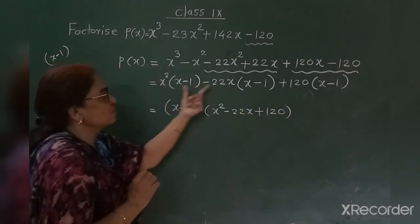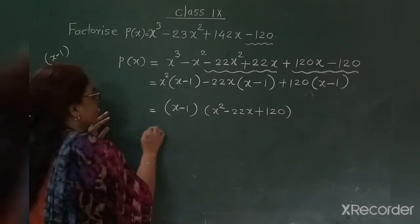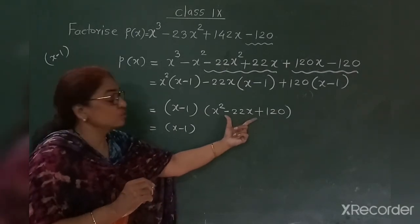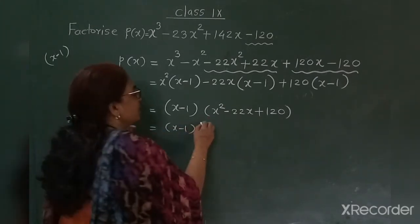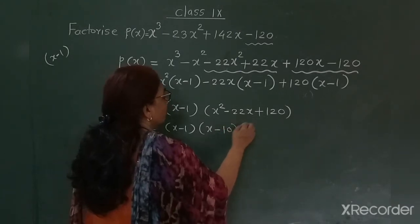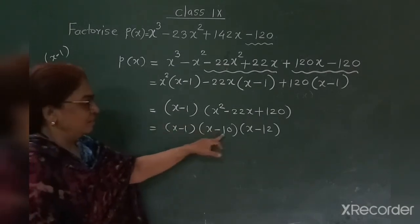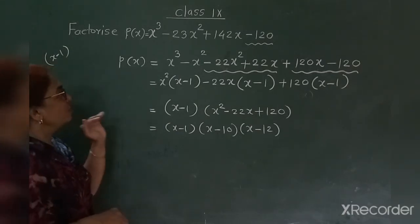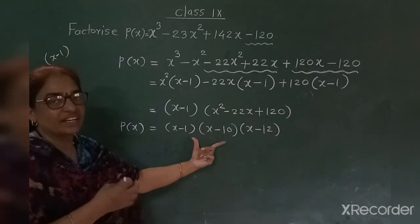I used x minus 1 here because it was the first factor we found. Now what do we do? We find the factors of this quadratic polynomial x squared minus 22x plus 120 by the splitting middle term method. So we get x minus 10 and x minus 12. Negative 10 and negative 12: their addition works out correctly. So in this way, P of x — the cubic polynomial — has all 3 factors found.